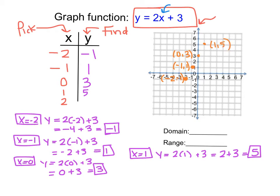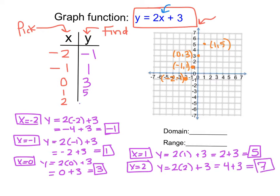And then we have our last point: x is equal to 2. So y equals 2 times 2 plus 3, which is 4 plus 3, and equals 7. So if we plot that, we have x is 2, y is 7.